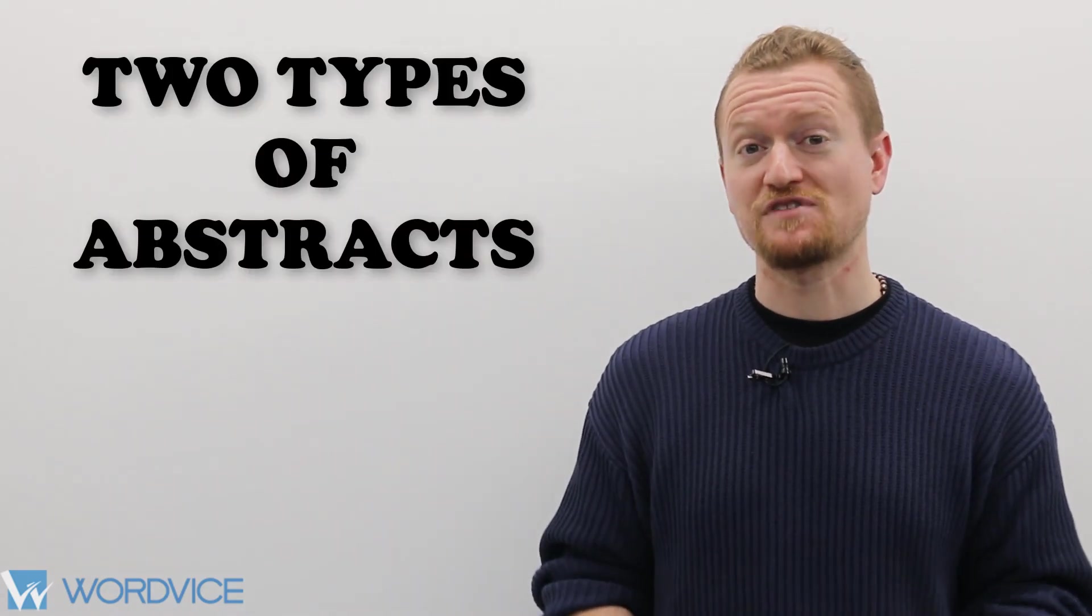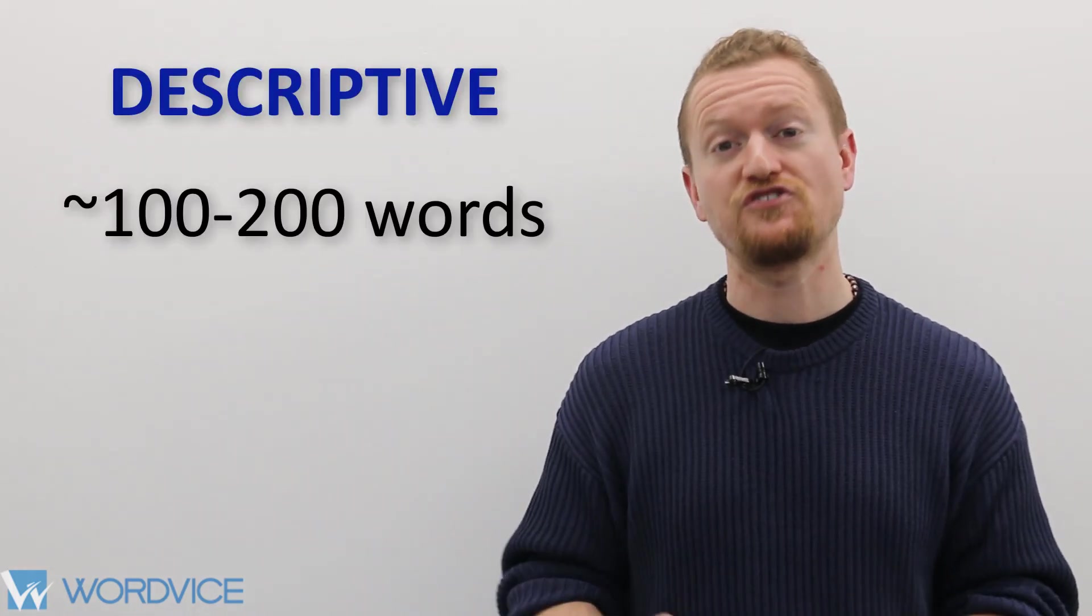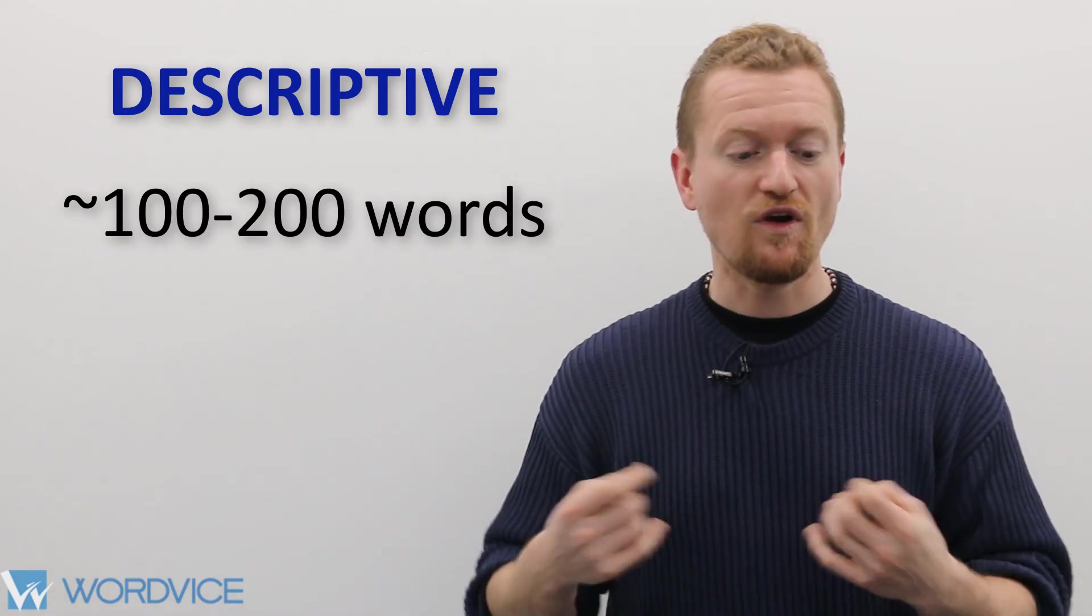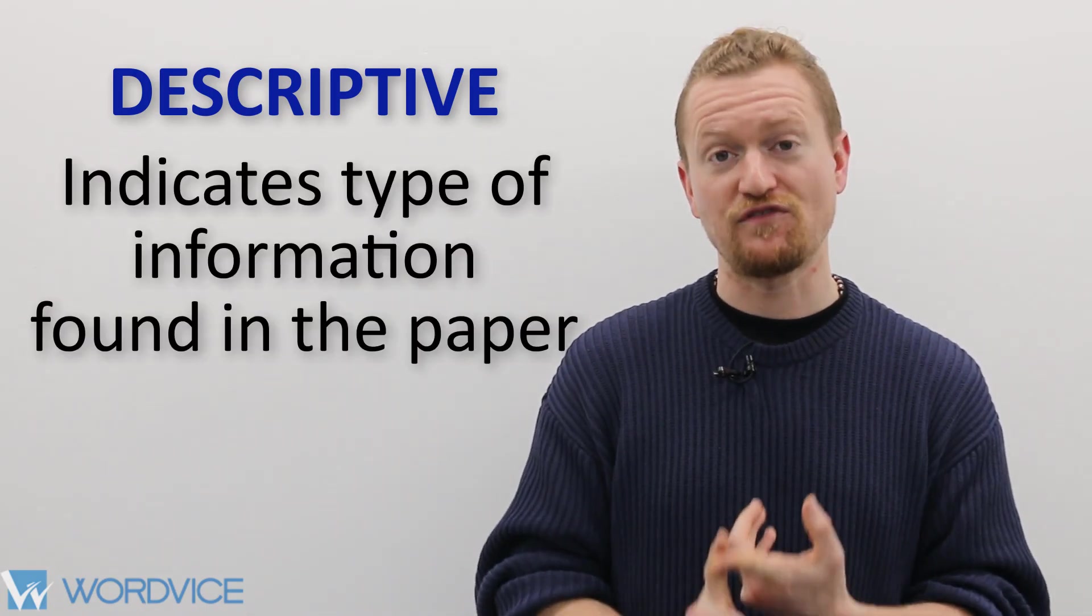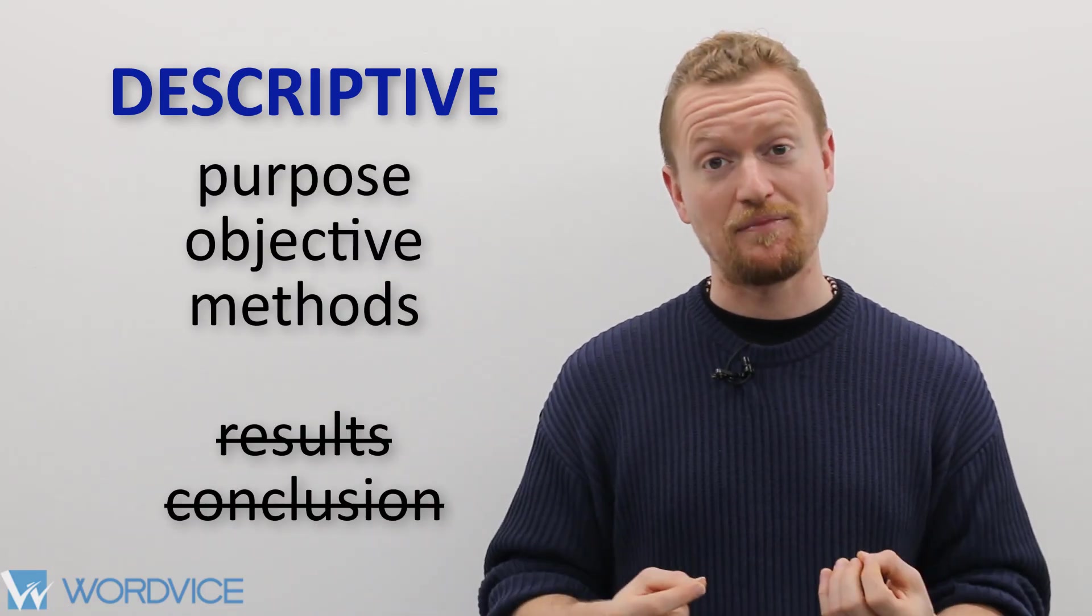There are two main types of abstracts that accompany research writing. The first is the descriptive abstract. The descriptive abstract is around 100 to 200 words in length, and what it does is it indicates the type of information found in the paper, it explains the purpose, objective, and methods of the paper, but not the results or the conclusion.